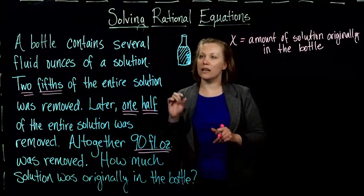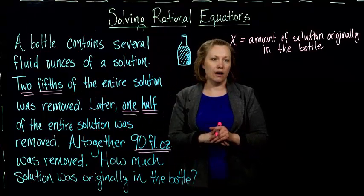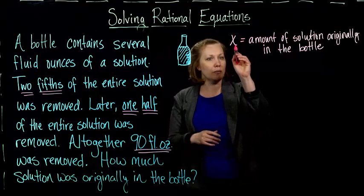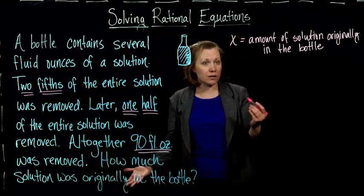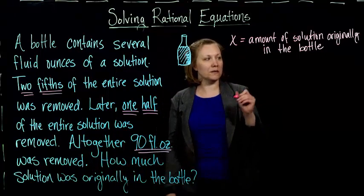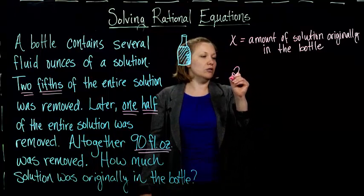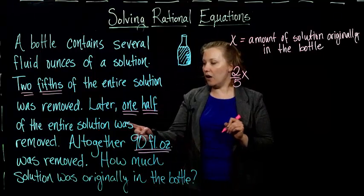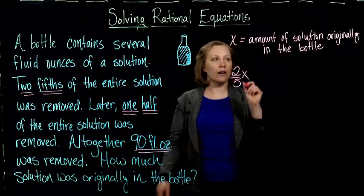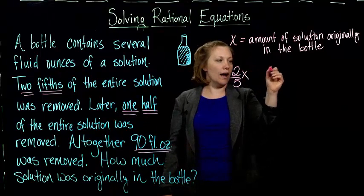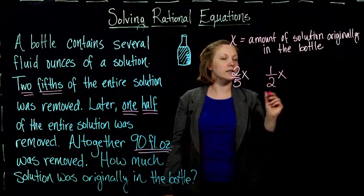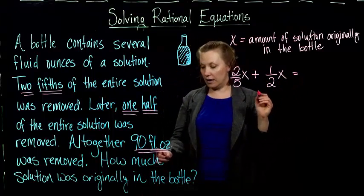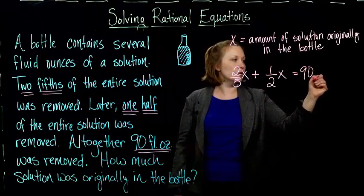How do I figure out two-fifths of the original amount? Well, the original amount was X. How do you find two-fifths of something? You multiply two-fifths times that number. So I get two-fifths X. And then I also took a half of the entire solution, so a half of X. And if I add those two up, I should get the 90 fluid ounces that was removed.